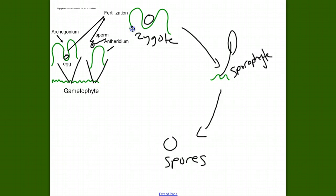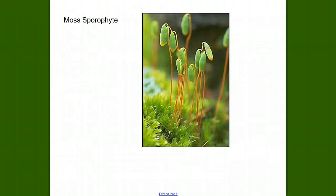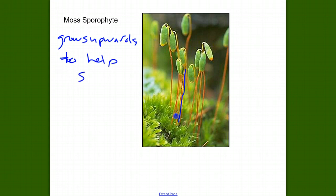Why do you think it is that the sporophyte grows upwards when the moss grows outwards? Think about it. Write it down. Here's a picture. Here's a picture of the sporophytes. You can see growing up off of the moss down here. The moss sporophyte grows upwards to help spore dispersal.